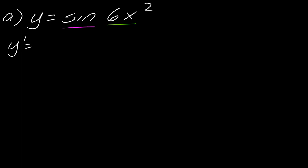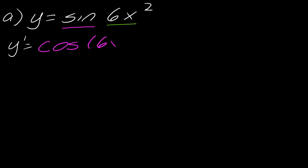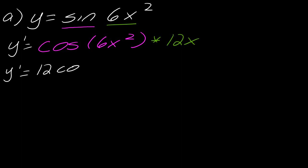I always like to work from the outside in. So first I take the derivative of the outermost function — the derivative of sine is cosine — and then I leave the inside intact. Sometimes people get confused as to what belongs with the cosine function, so you might want to write out a set of parentheses just to remember what's attached to it. Now I multiply by the derivative of the inside function, so the derivative of 6x squared is 12x. So this will be 12x cosine of 6x squared.